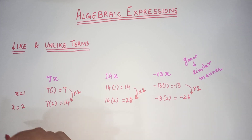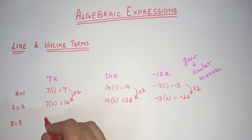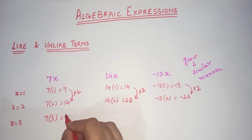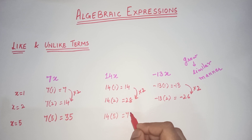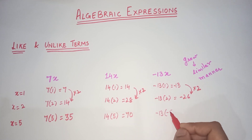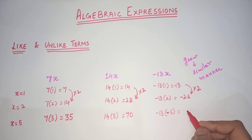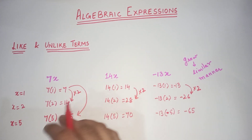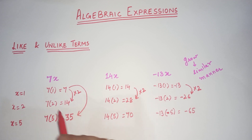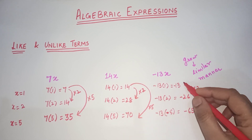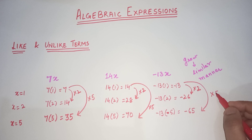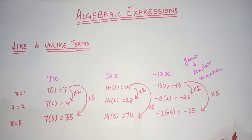They are growing in a similar manner. Now let's take another value of x, say 5. 14 times 5 is 70, and negative 13 times 5 is negative 65. Again, if we compare with the values when x was 1, we can see how each term is growing — it is becoming multiplied by 5. So all these 3 terms are growing in a similar way, so these are like terms.